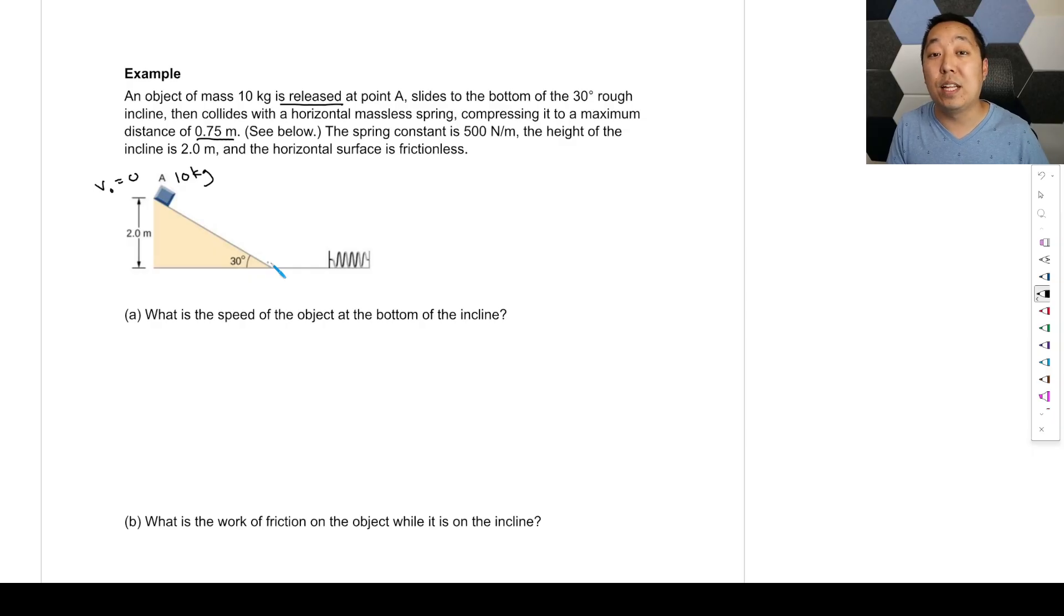Okay, so we have a lot of things happening here. We want to know the speed of the object at the bottom of the incline. So I would say there are three points of interest which we might calculate energy. We have energy at the top here. We have energy at the bottom here. And then when we have maximum compression, it compresses 0.75 meters, and then it actually comes to a rest here, by the way.